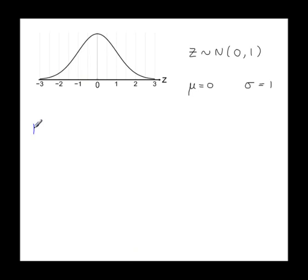Okay, second example. The probability that z is less than 1.28. So again mark a line 1.28 on the sketch. Go to the tables.